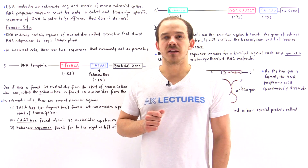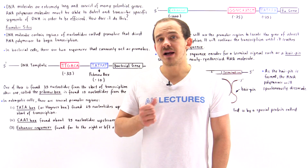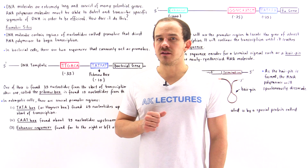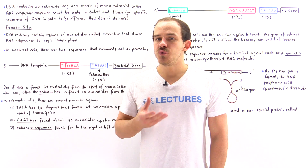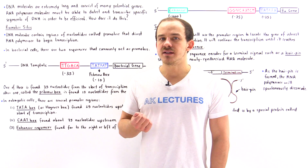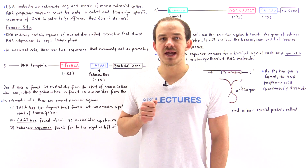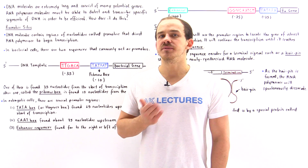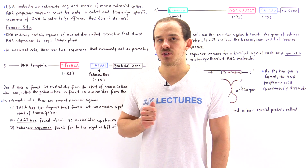RNA polymerase molecules are biological catalysts used by our cells to synthesize RNA molecules from DNA molecules.